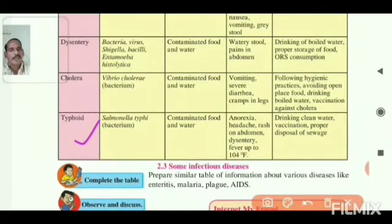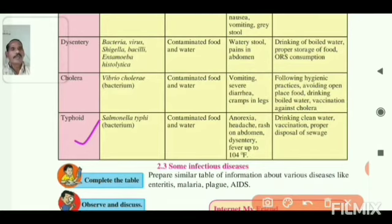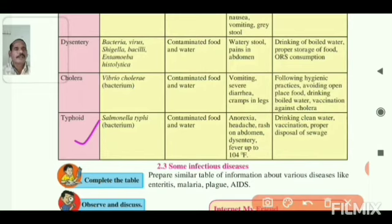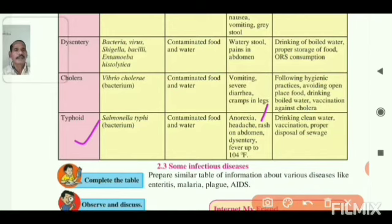The next disease is typhoid. It is caused by Salmonella typhi bacteria, transmitted through contaminated water. Symptoms include anorexia and headache.